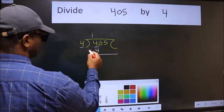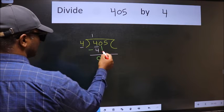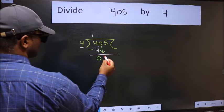Now we should subtract. We get 0. After this, bring down the beside number. So 0 down.